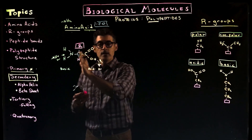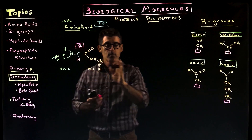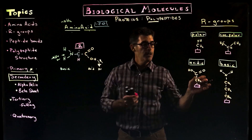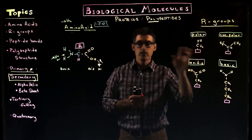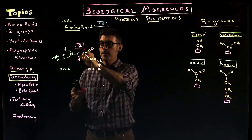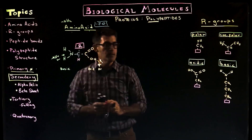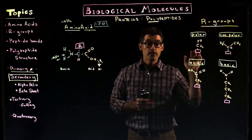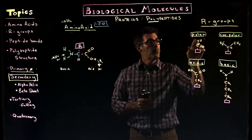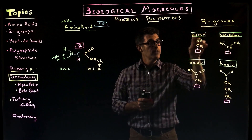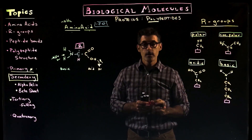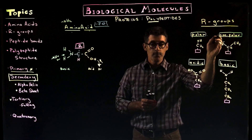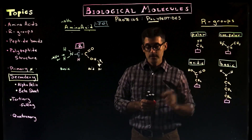We're going to look at how amino acids are joined together with peptide bonds to build chains. But first, let's keep looking at the R group. There are 20 R groups, and they're going to be broken down into four categories: polar, nonpolar, acidic, and basic.